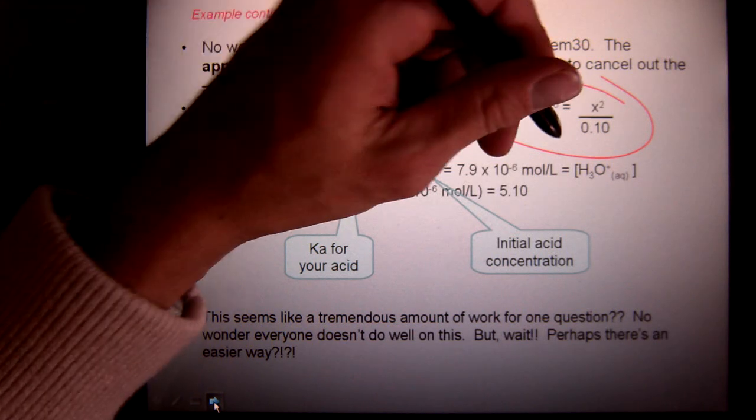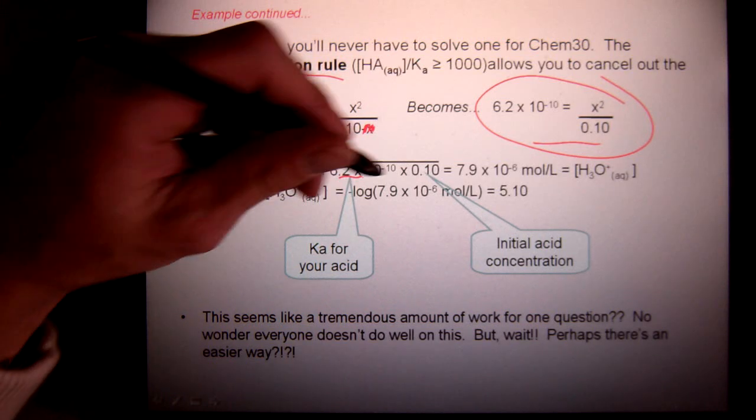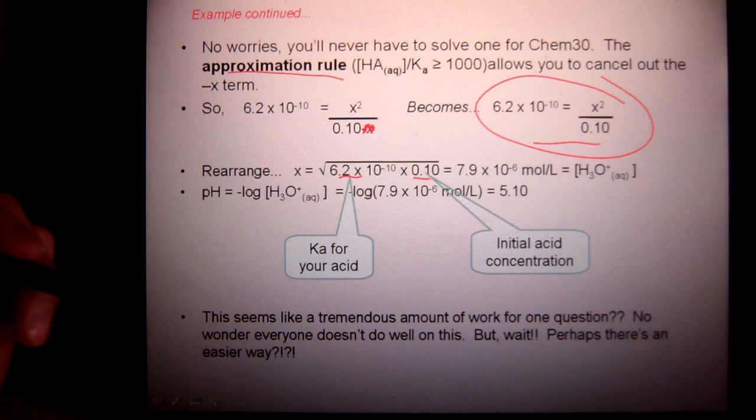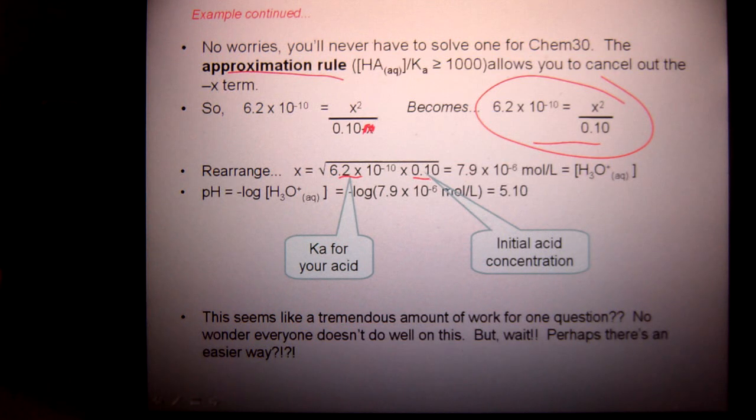So, then I can just quickly rearrange this to solve for x. Which is going to be the K value, times the concentration, and then square rooting it. Don't forget to square root it. And that becomes your hydronium concentration. And then, either you're done, or you have to solve for pH, like we always do.